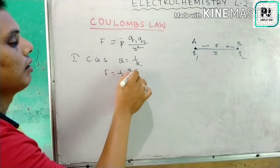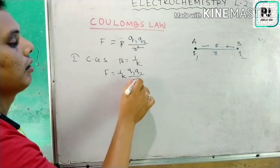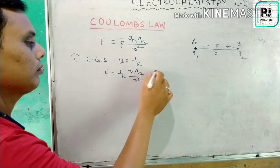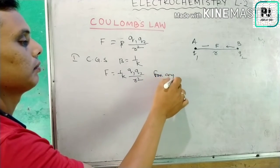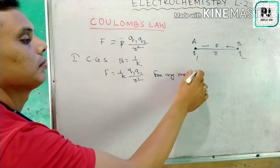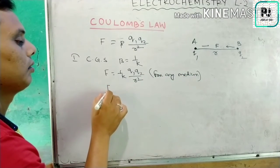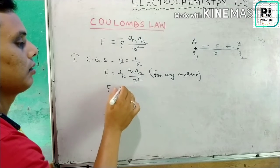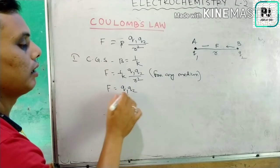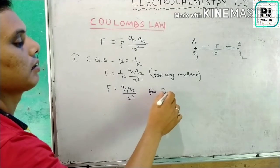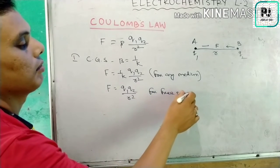In CGS, for any medium, F equals 1 over k times q1 times q2 divided by r squared. For free space in CGS, beta has the value 1, so F equals q1 times q2 divided by r squared.